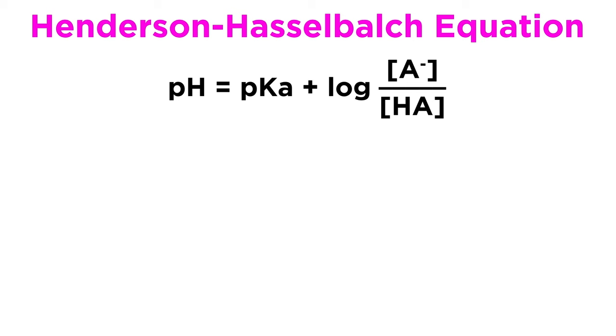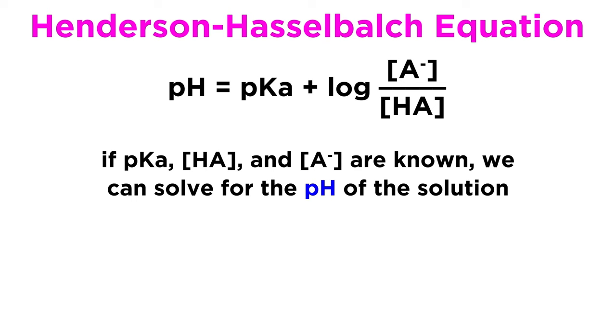There are two contexts in which this can be used. First, when looking at an existing buffer solution, if the pKa of the acid involved is known, and we have a way to measure the concentration of both the acid and the conjugate base, then we can plug these values in to solve for the pH of the solution.